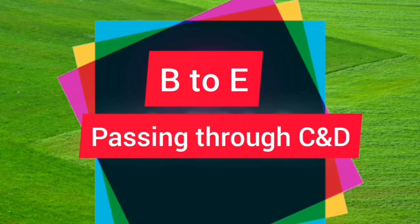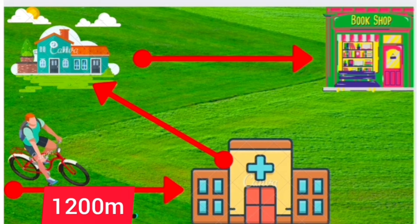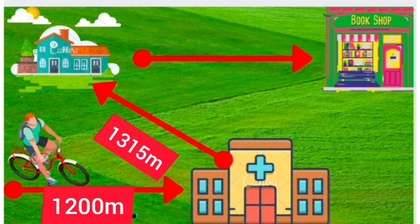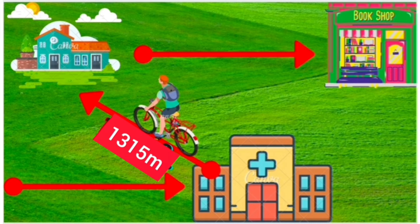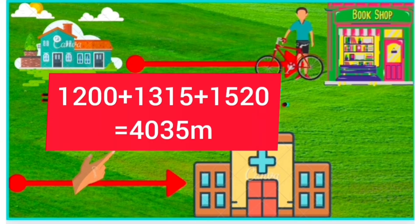Now Raju has to go from point B to E. At B is the religious place and at E is the shop. Point C is the hospital and its distance is 1200 meters. The distance between the hospital and the house is 1315 meters, and the distance of the shop is 1520 meters. Raju has covered the total distance by adding all the distances, and the answer is 4035 meters.